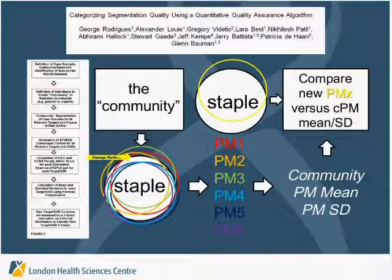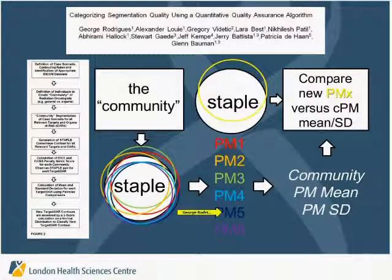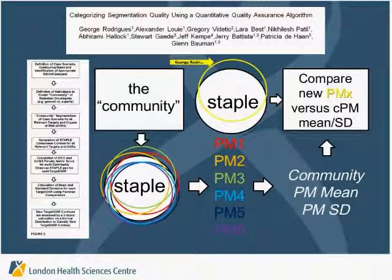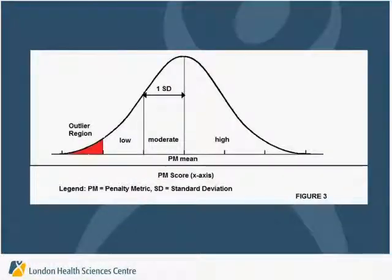Then you create penalty metric scores for each physician: physician one versus staple gives penalty metric one, physician two versus staple gives penalty metric two, and so on. With six individuals, you get six penalty metric scores, which allows you to do descriptive statistics to get a mean and standard deviation. A seventh individual not part of the community then contours the case, and their new penalty metric score is compared versus the community distribution.